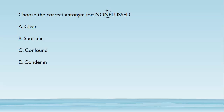Choose the correct antonym for 'nonplussed.' Nonplussed means confused — if you nonplus someone, you have confused them. The antonym for nonplussed will be making things clear, so the answer is 'clear.' 'Sporadic' refers to events which occur intermittently, not very regularly. 'Confound' is a synonym for nonplussed — it means to confuse.